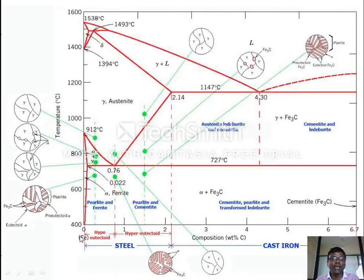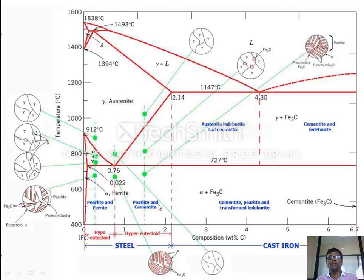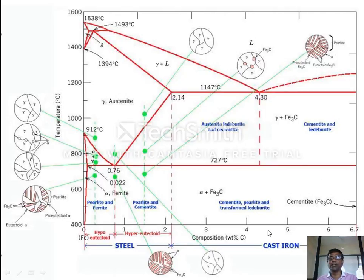To recollect: on the left is 100% Fe and on the right is 6.7 weight% carbon. Heating pure iron takes it through the alpha, gamma, and delta phases with their corresponding melting temperatures. Adding carbon up to 2.14 weight% gives you the hypo-eutectoid steel region. Below 727°C you get various phases. Above 2.14% up to 6.7%, it is cast iron, with phases such as cementite and pearlite.